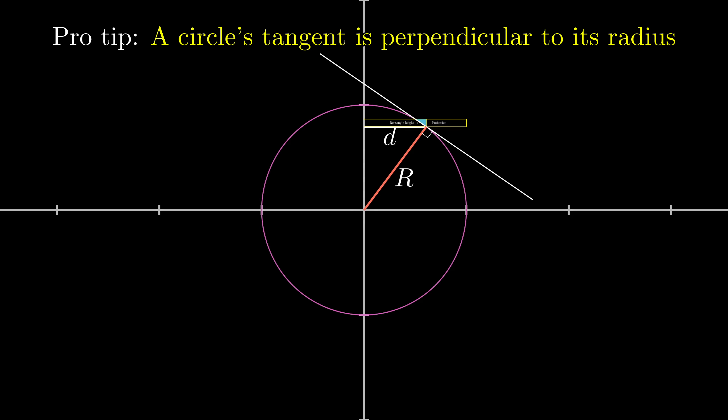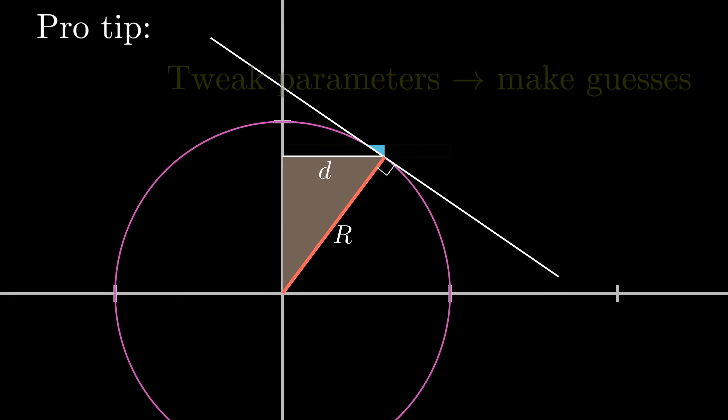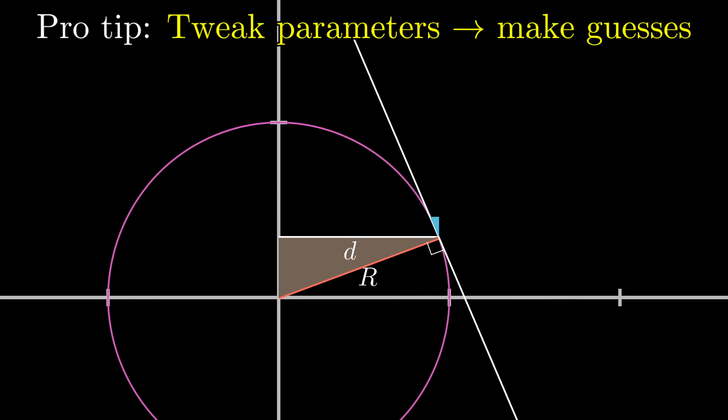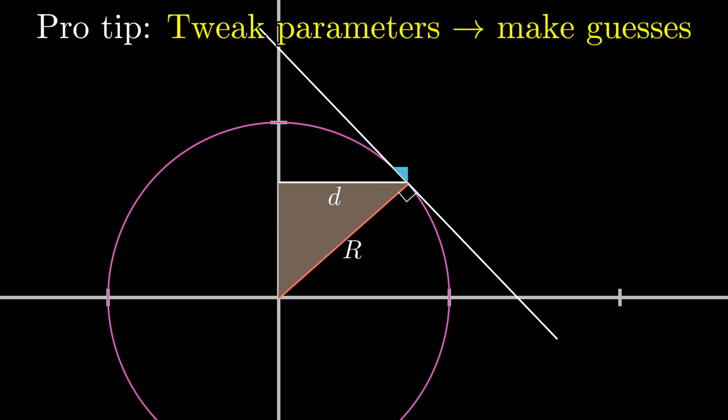In our case, once we draw that radial line, together with the distance d, we have another right triangle. And often in geometry, I like to imagine tweaking the parameters of a setup and imagining how the relevant shapes change. This helps to make guesses about what the relations might be.